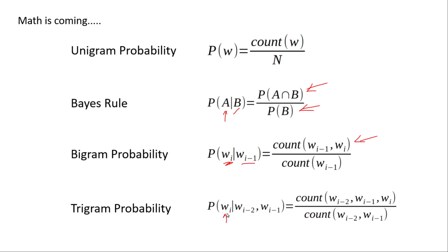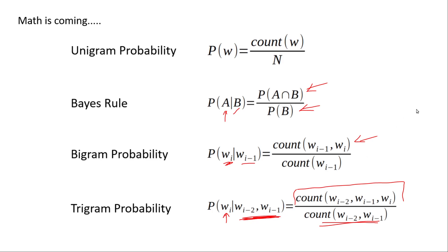For trigrams, you want to calculate the probability of this word given two words: W(i-1) and W(i-2) are given. Again you calculate for three sequential words. So the sequence is W(i-2), W(i-1), and then W(i). These three words in the numerator, and then the two words already given come in the denominator. So you calculate how many times these two words occur in sequence in your corpus, divided by these three words occurring in sequence. That's how you get the probability of W(i) given the previous two words. This is all the math required for building your language model — you don't need to know anything else.